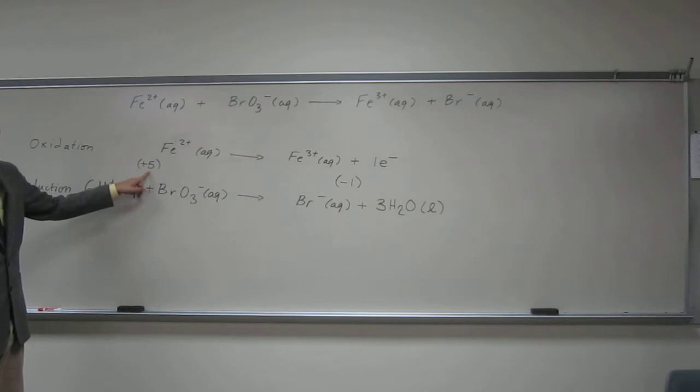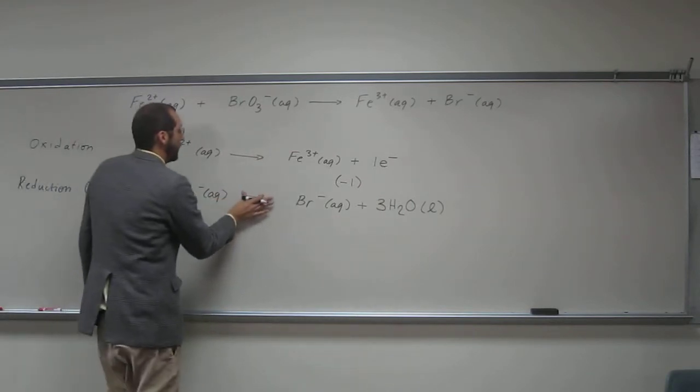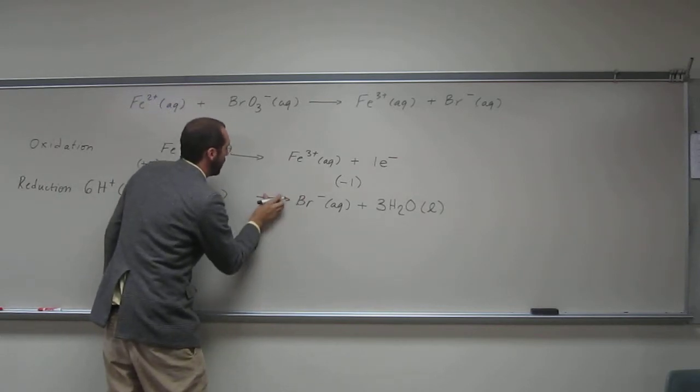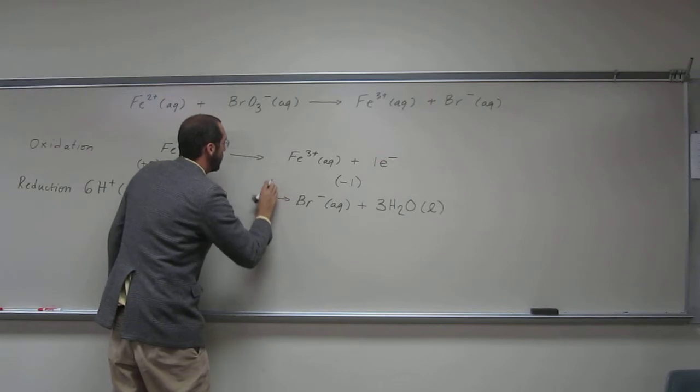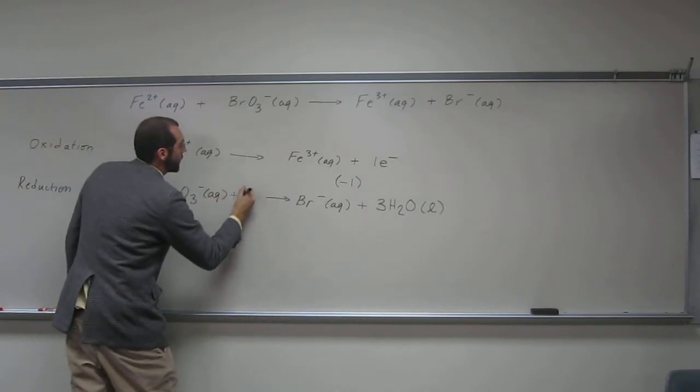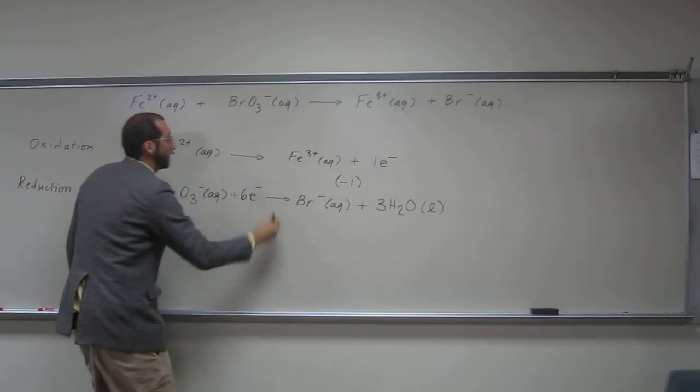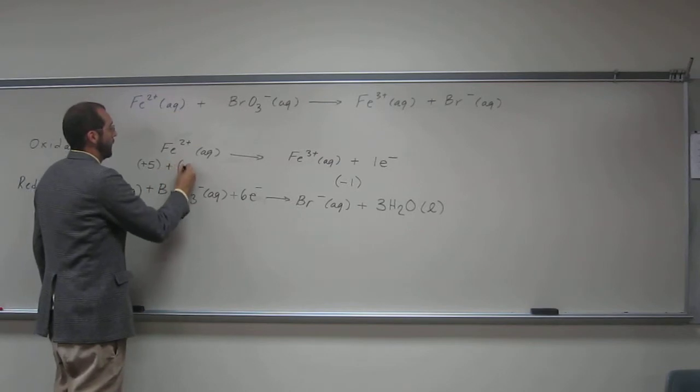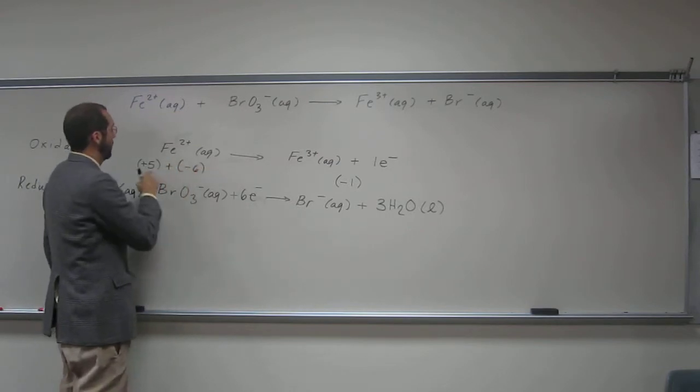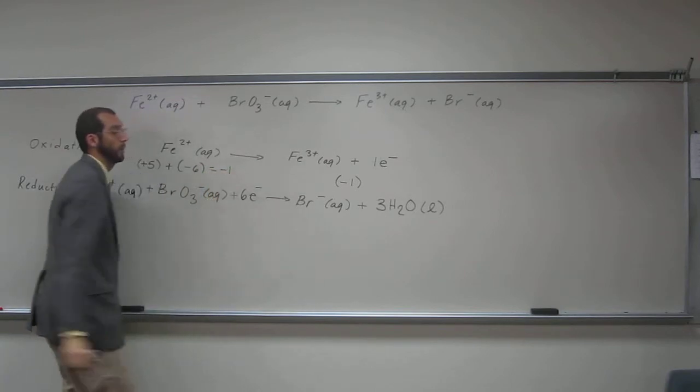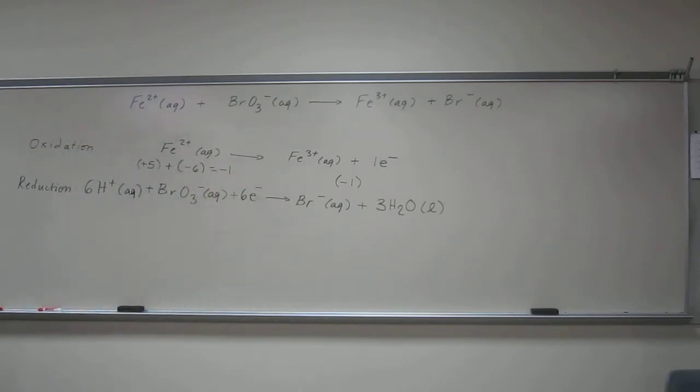Because we're going to have to get that +5 to be equal to -1. So in order to do that, we're going to add 6 electrons, like that. And so if we add -6 plus 5, +5 plus -6, that equals -1. Does that make sense?